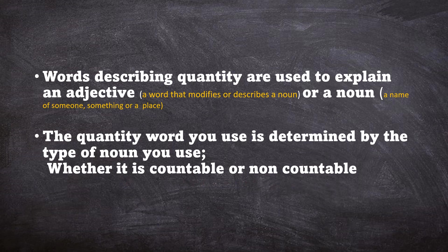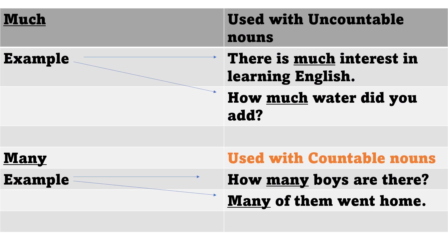The first example we have about the words and phrases of quantity is much. It is used with uncountable nouns. The first example is there is much interest in learning English. The other sentence is how much water did you add? We can't count the water, so here we're using this word of quantity with the non-countable noun.